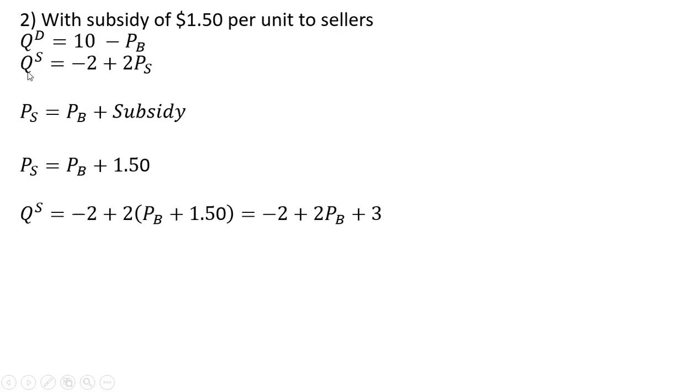So what I'm going to do is take my supply equation up here, and where I have this P subscript S, I'm going to replace it with P subscript B plus the subsidy of $1.50. So that's what I have in parentheses. So where I have the P subscript S, we're replacing that with P subscript B plus $1.50.